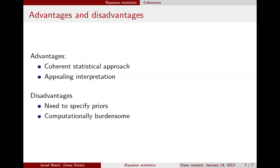Two disadvantages. First, we need to specify priors — typically priors for parameters conditional on the model of interest, and also, if doing model selection, priors on the models themselves. Second, there are very few problems that can be solved in an analytically tractable form from a Bayesian perspective, and therefore the approaches we'll talk about later in the course quickly become computationally burdensome. They can still be done, but there is some time and computation involved.